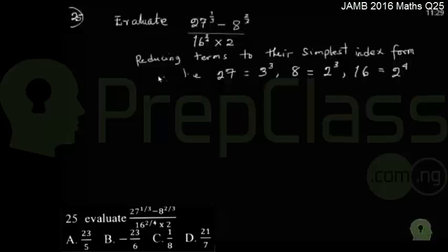We are currently on question 25. This is a question that deals with indices, and we have to evaluate 7 raised to the power of 1 over 3, minus 8 raised to the power of 2 over 3, all over 16 raised to the power of 2 over 4 times 2.